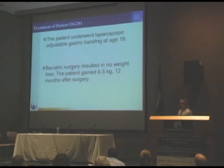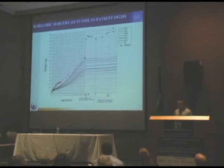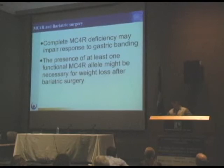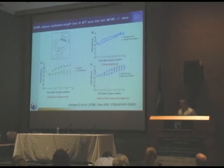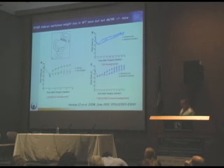This patient underwent laparoscopic adjustable gastric banding at age 18 and bariatric surgery resulted in no weight loss — the patient gained 6.5 kilograms 12 months after surgery. This suggests that complete MC4R deficiency may impair response to gastric banding, and the presence of at least one functional MC4R allele might be necessary for weight loss after bariatric surgery. A mouse study by Hadum et al. used a procedure similar to Roux-en-Y in mice, showing that wild-type mice lost weight, while MC4R null mice showed very little or no difference between sham and operated animals.